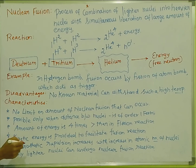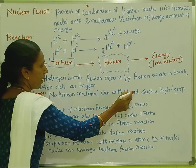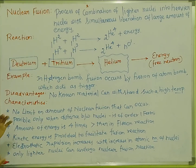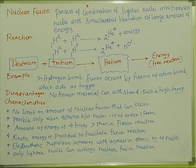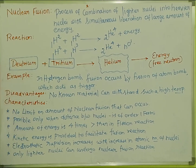Now, a disadvantage: nuclear fusion is disadvantageous because no material can withstand such a high temperature. High temperature means no known material is able to withstand it. That is why it is very difficult to design a thermonuclear fusion power plant — the high temperature makes the design extremely challenging.